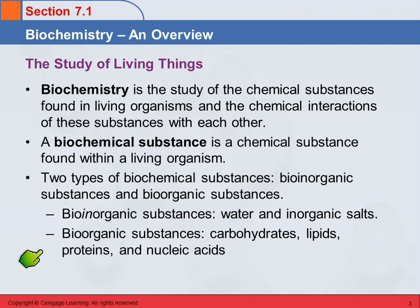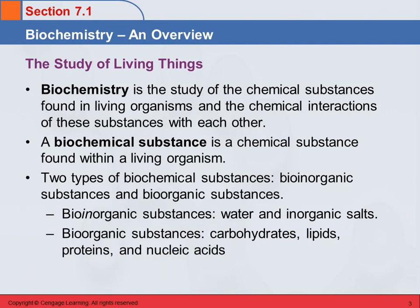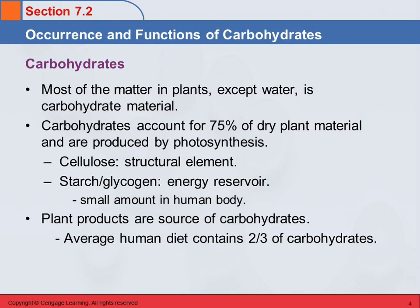And then there are the bio-organic substances, and these are the ones we're going to talk about in the rest of this class: carbohydrates, lipids — which are fats — proteins, and nucleic acids. So, carbohydrates first. Other than water, most plant matter is made up of carbohydrates — 75% of dry plant material.